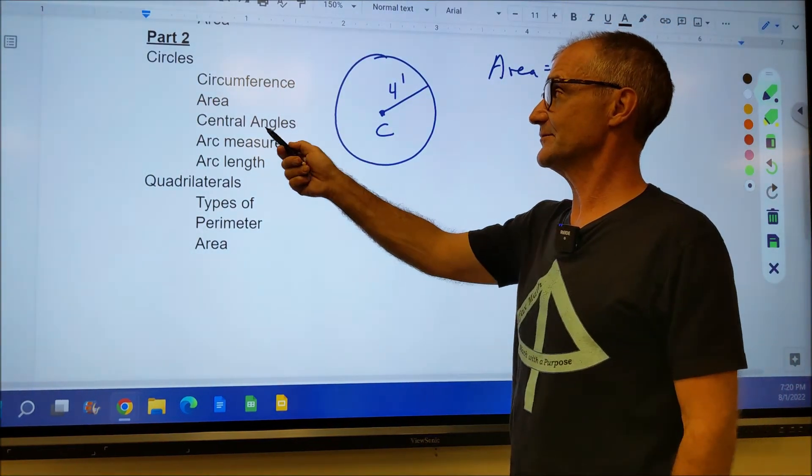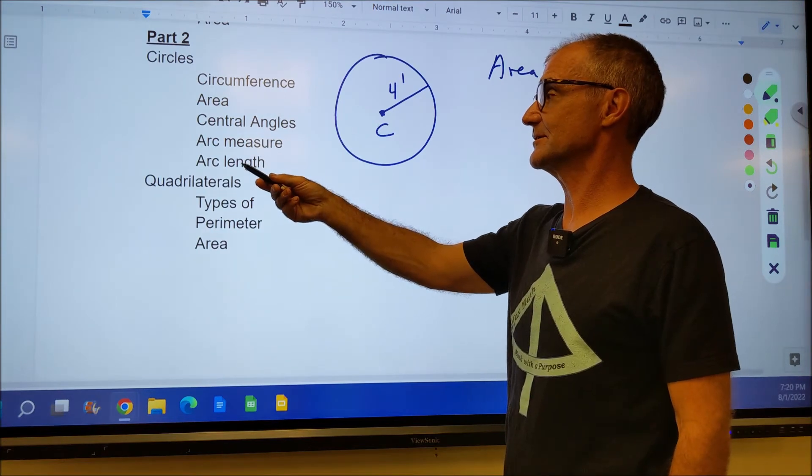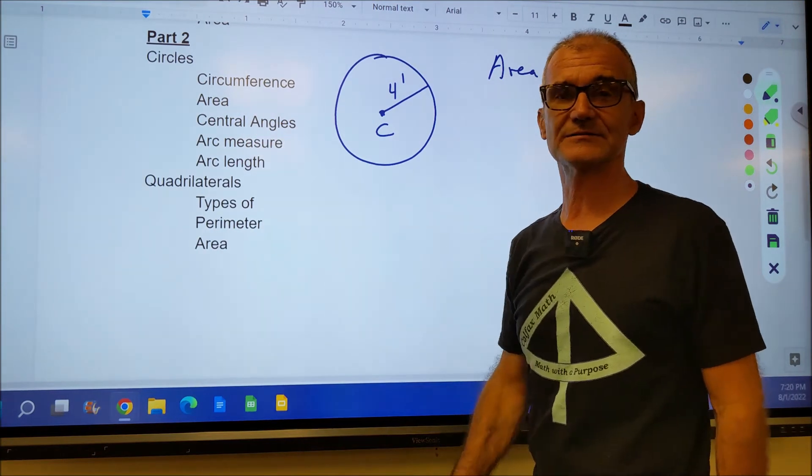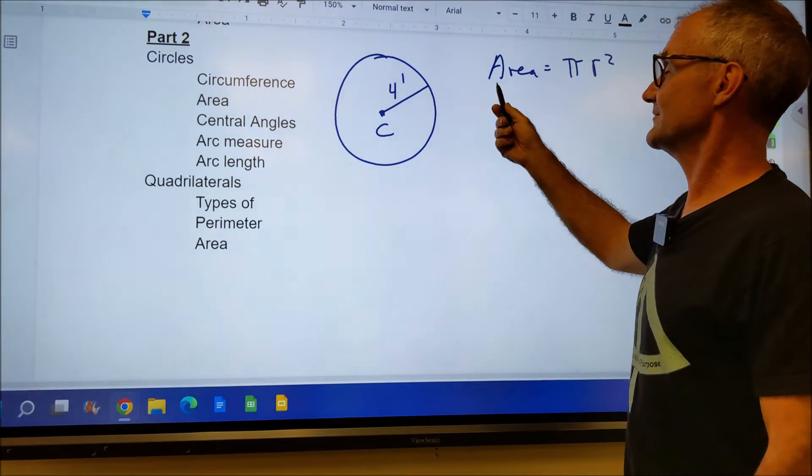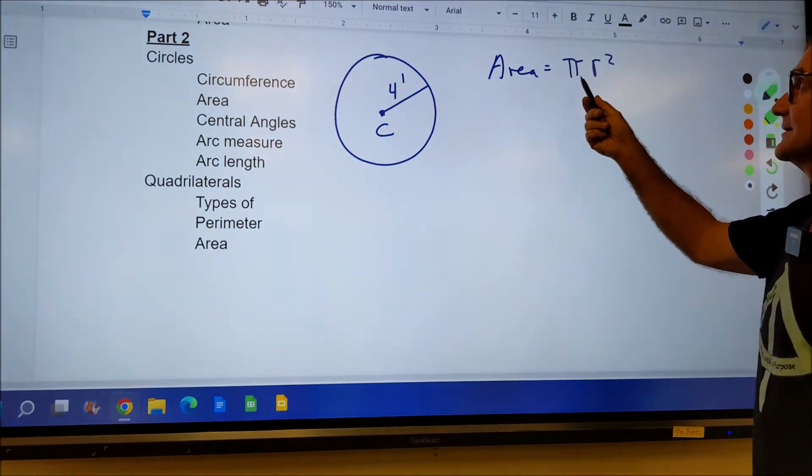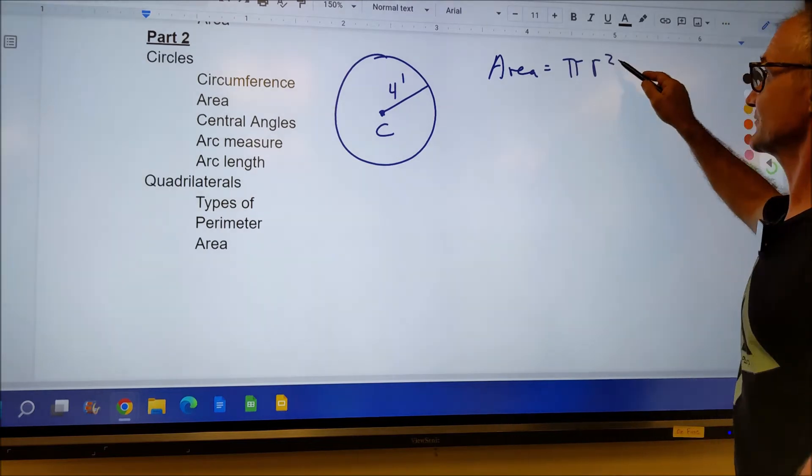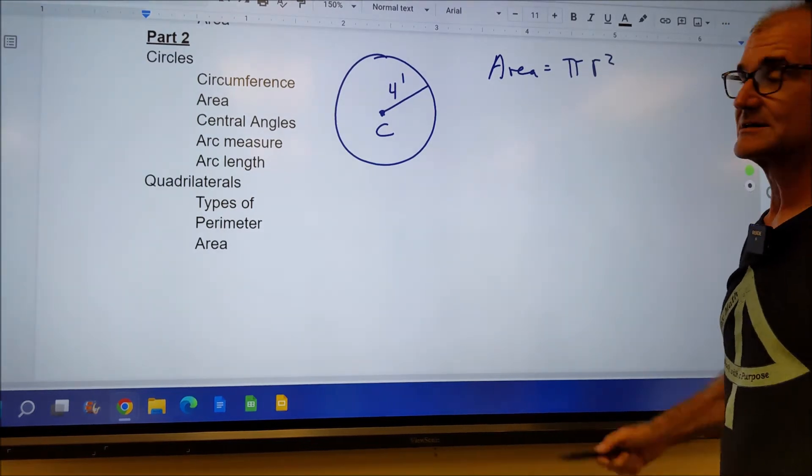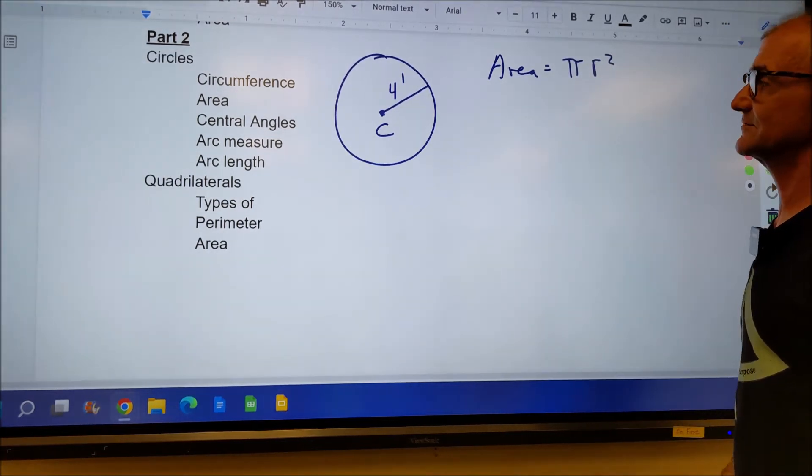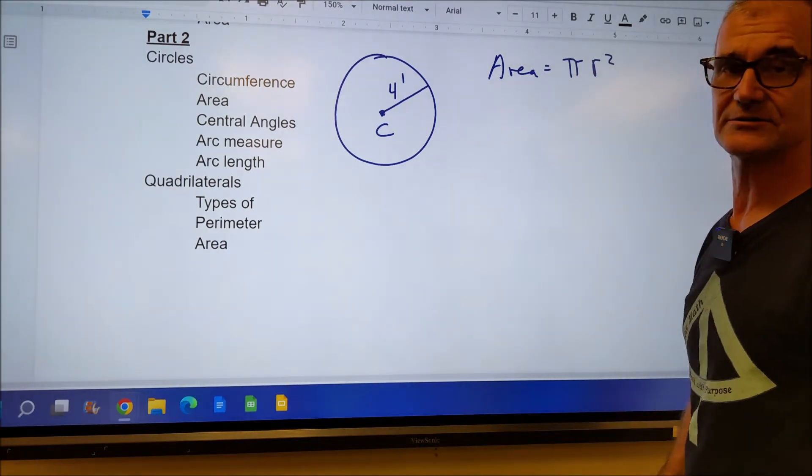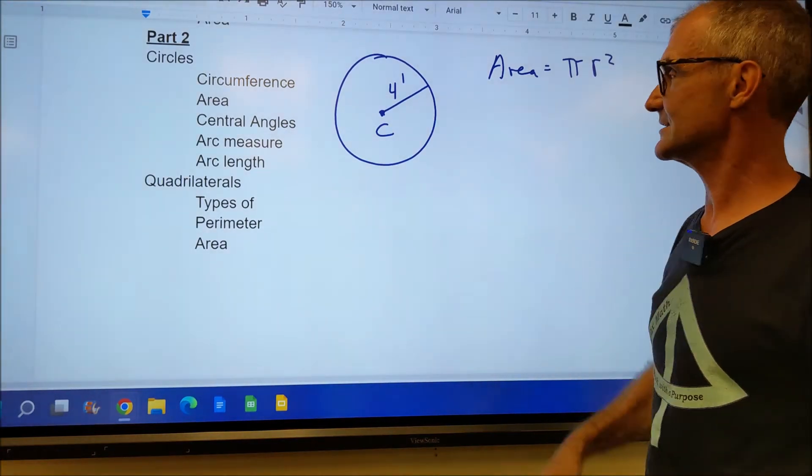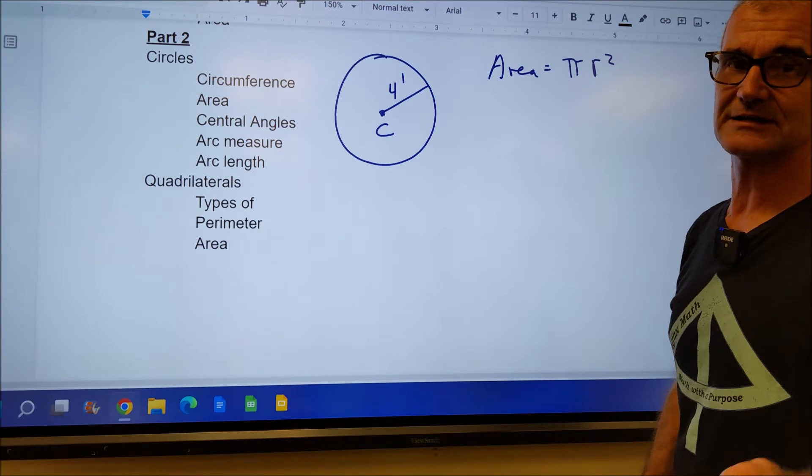We've talked about circumference, central angles, arc measures, and arc lengths. Now let's talk about the area of a circle. Area of any circle is equal to pi times the radius squared. Remember order of operations is exponents before multiplication. So it's really important you square that radius first. Find the area of that circle and also find the circumference. Pause the video and do that.